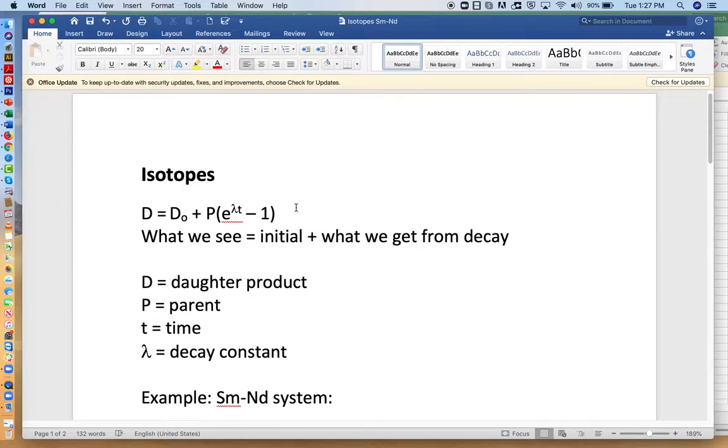They are used a lot to understand the sources of various kinds of things, not just igneous rocks, but they're also used a lot in tracing groundwater systems, for example. Anyway, we're going to look at igneous rocks again, just to keep the analysis simple and familiar.